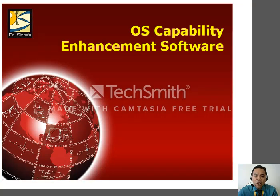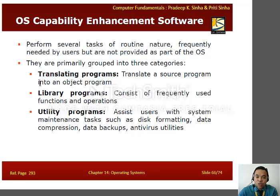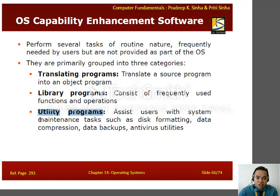OS capability enhancement software performs tasks of routine nature frequently needed by users but not provided as part of the operating system. Categories include: translating programs, which translate source code into object programs; library programs, which consist of frequently used functions and operations; and utility programs, which assist users with system maintenance tasks such as disk formatting, data compression, data backups, and antivirus utilities.